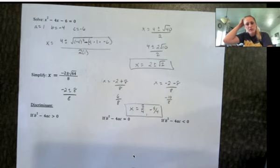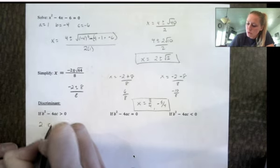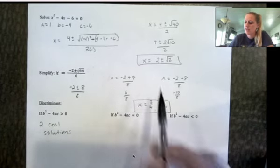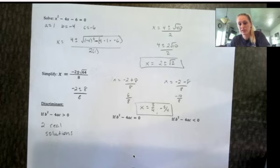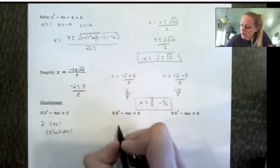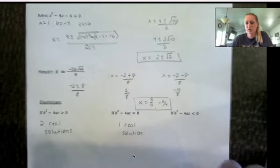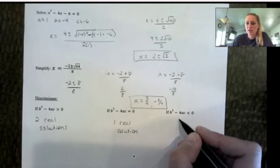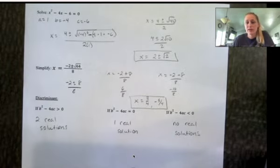The part under the square root — b squared minus 4ac — is called the discriminant. If the discriminant is positive, we have two real solutions, which the plus or minus accounts for. If the discriminant equals zero, there is one real solution, because adding or subtracting zero doesn't change anything. If the discriminant is negative, there are no real solutions, because we cannot take the square root of a negative number in the real number system.